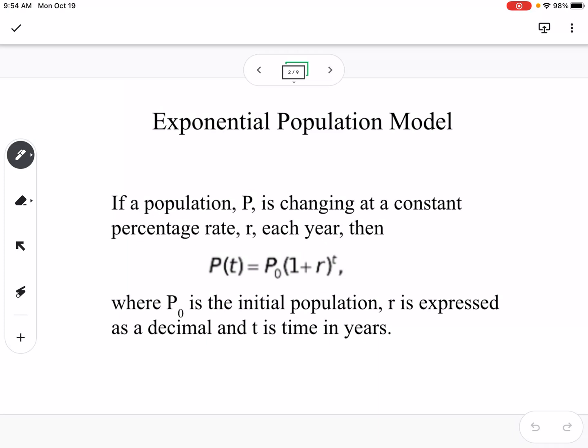For the exponential population model, if a population P is changing at a constant percentage rate R, then we can use P of T equals P sub 0, which is the initial population, times 1 plus the rate R, which is expressed as a decimal, and T is our time in years.